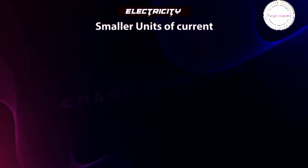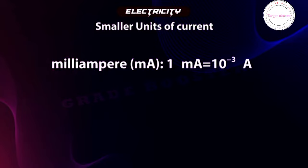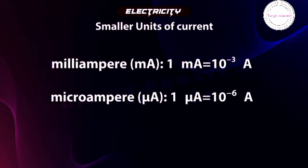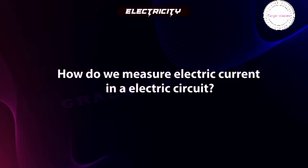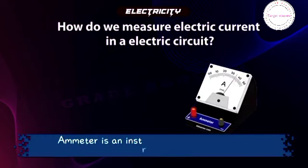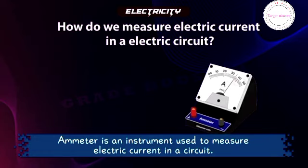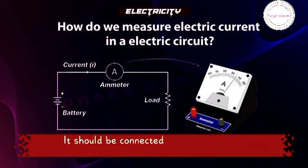Smaller units of current: milliampere, 1 mA = 10⁻³ A; microampere, 1 μA = 10⁻⁶ A. An ammeter is an instrument used to measure electric current in a circuit. It should be connected in series with the circuit components.